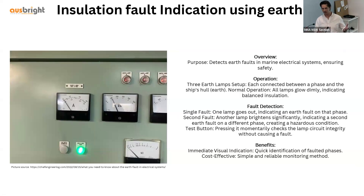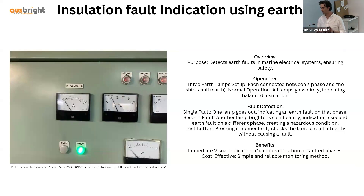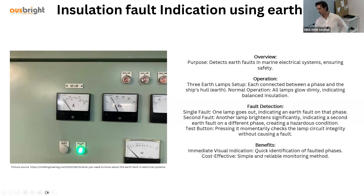Now we've learned about an IT system, I'm going to move on to the insulation monitoring devices that have to be employed to help monitor Earth faults — ensuring that if you do have an Earth fault, you know about it and can rectify it before a second Earth fault can occur. The first insulation monitoring devices were simply three LED lamps, still used today, however they're not very sophisticated.